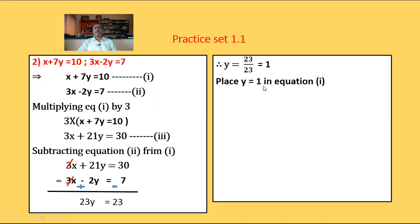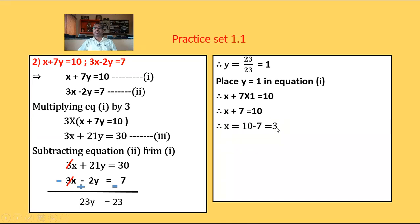Substitute y equals 1 in equation 1: x plus 7y equals 10. So x plus 7 into 1 equals 10, giving x plus 7 equals 10. Moving 7 to the RHS: x equals 10 minus 7 equals 3. Hence the solution of the given simultaneous equation is x equals 3 and y equals 1.